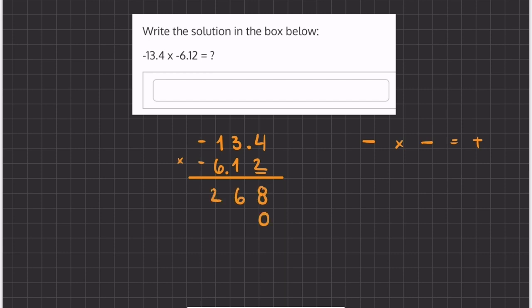Now we're going to move one column over and place a placeholder, and now we're going to start multiplying this 1 by all the numbers above. So we have 1 times 4, which is 4, 1 times 3, which is 3, and 1 times 1, which is 1.